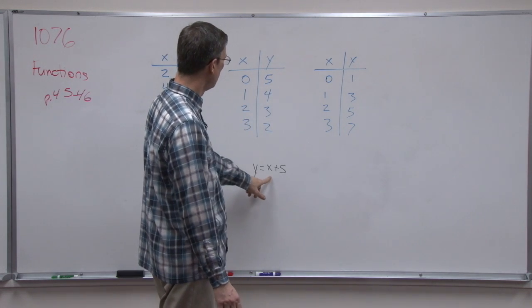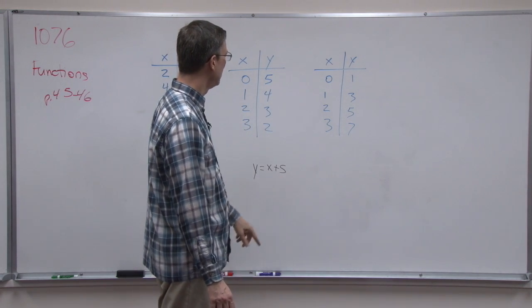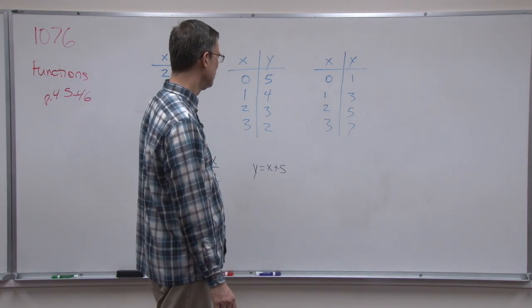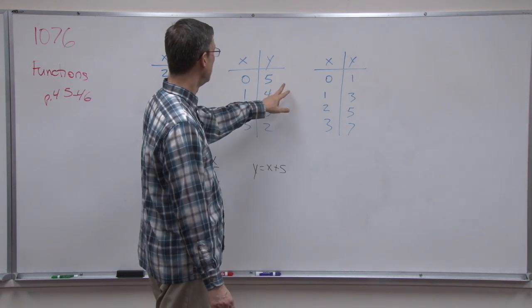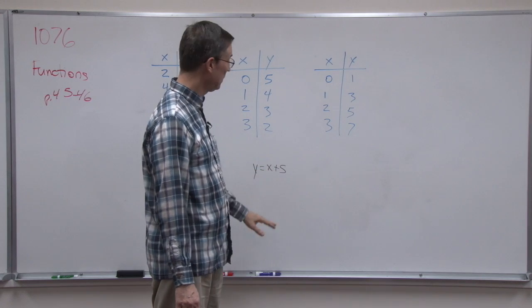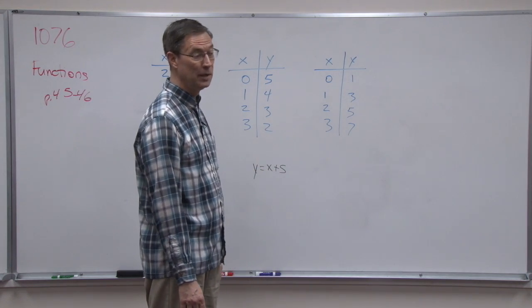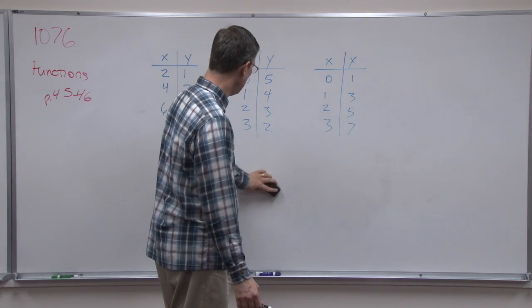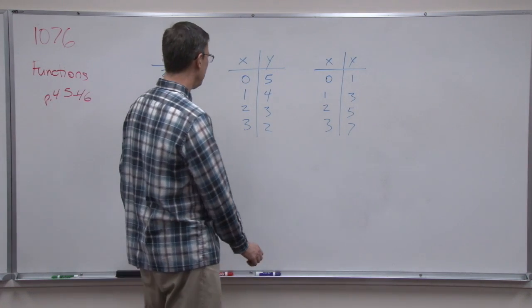Let's plug in 1. 1 plus 5. Oh, wait a minute. That's not going to work, because that gives me 6. 1 plus 5 is 6, and 2 plus 5 is 7. So if these were different numbers, if this was 5, 6, 7, 8, then this rule would work. But that's not what's working. So I've got to play around with it some more and see.